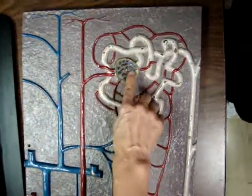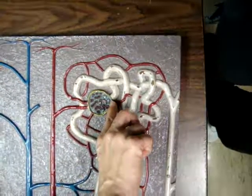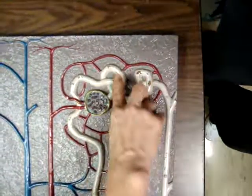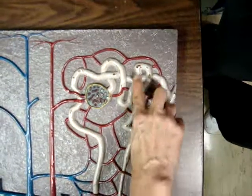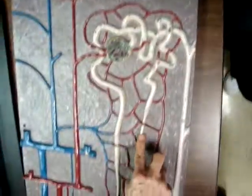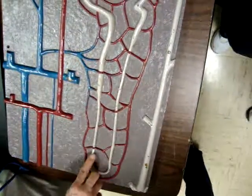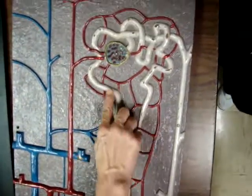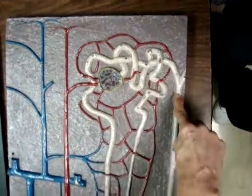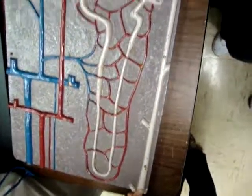From the glomerulus, the fluid flows into the capsular space to the proximal convoluted tubule — kind of follow with your finger — descending limb of the loop of Henle, ascending limb, distal convoluted, collecting duct, and probably down here would be papillary.